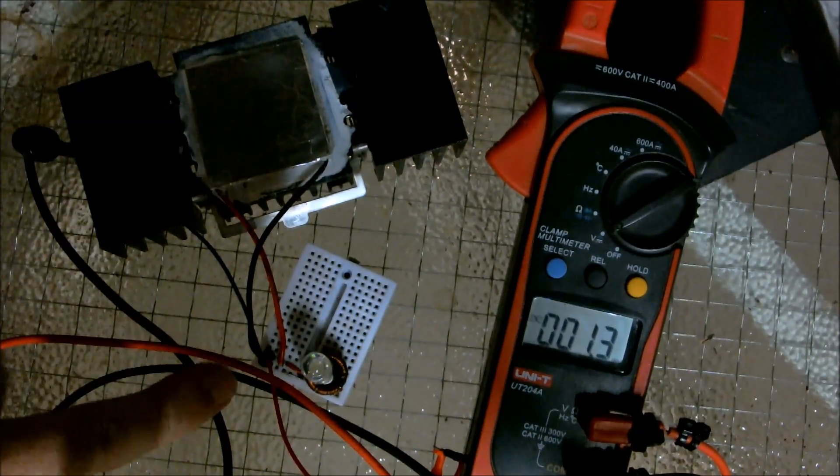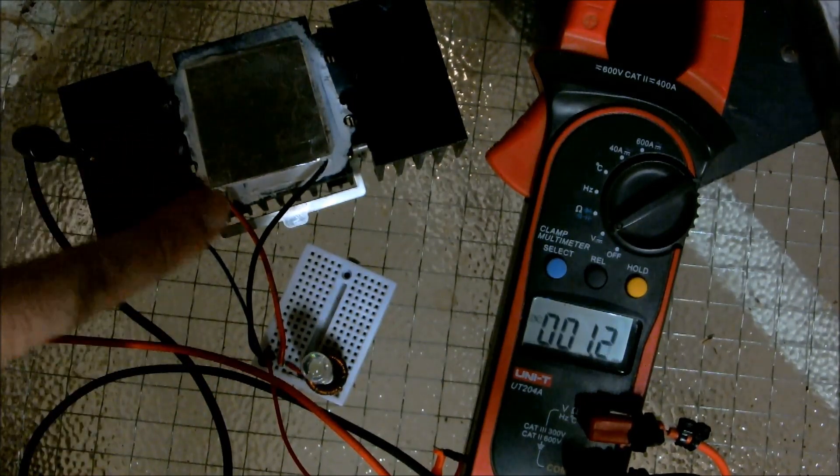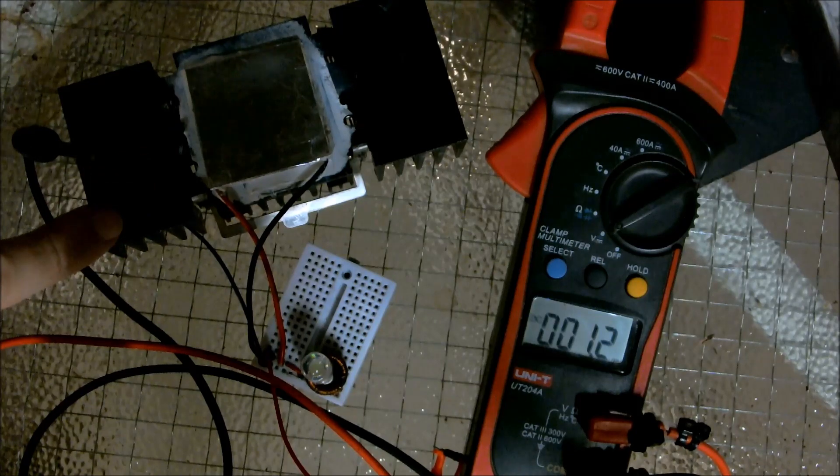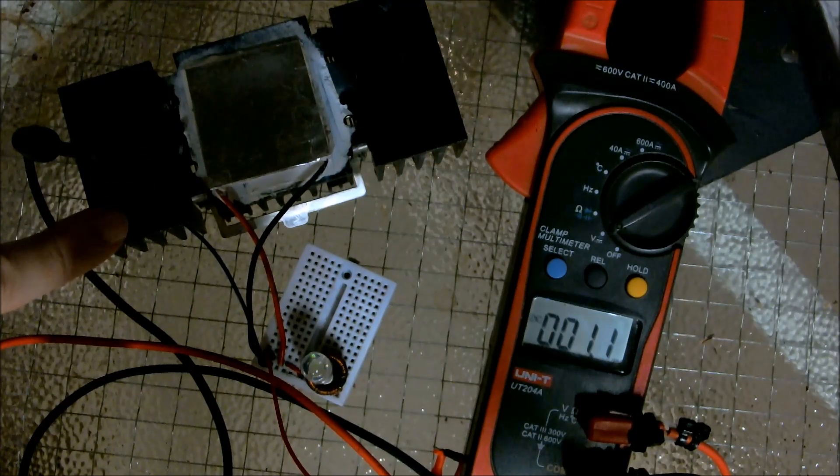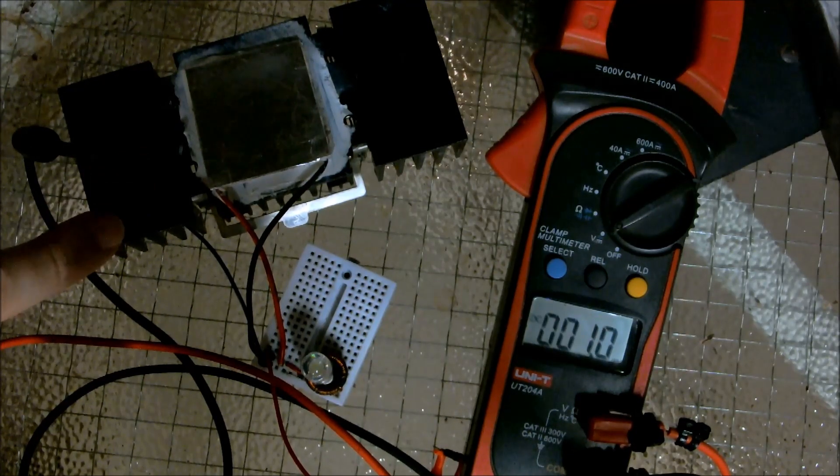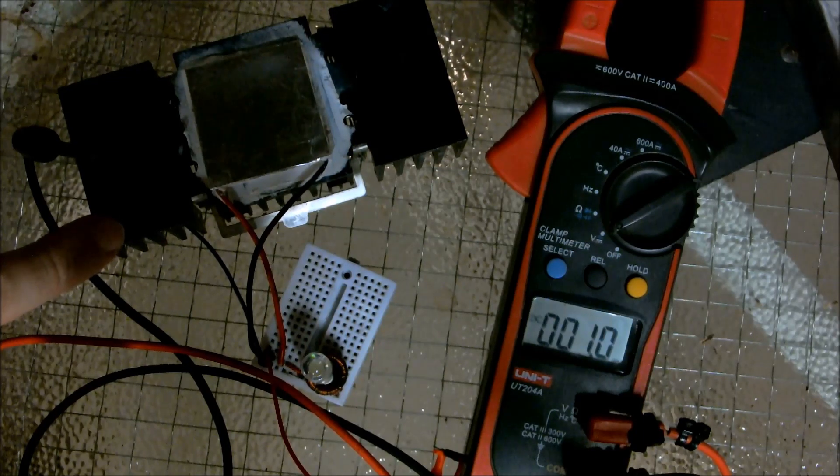Here I have the Joule Thief connected to a Peltier plate. The plate is mounted on a heatsink which is at 23 degrees Celsius at the moment. My hand is at 30 degrees.